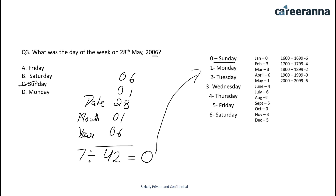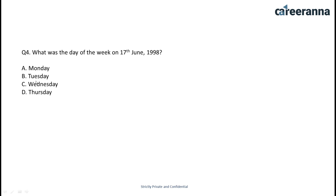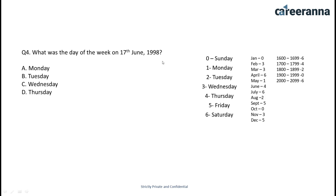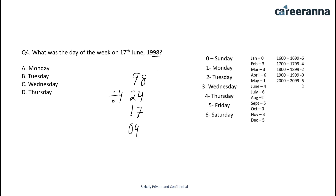Let's see question number four. What was the day of the week on 17th June 1998? We are going to do the same thing. We take the last two digits of the year — that is 98. We divide it by 4 and get the quotient 24. Then we take the date, which is 17. The month is June, so according to the table we take 4. For the year, we are talking about 1990 to 1999, so the year number is 0.